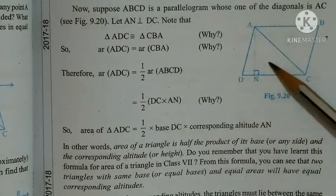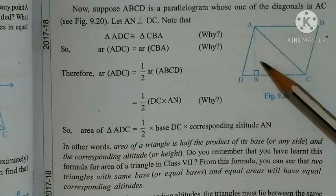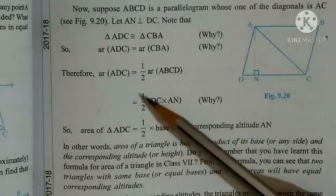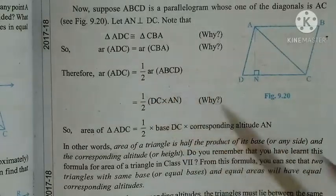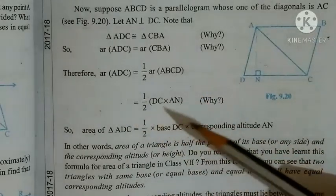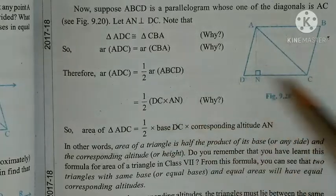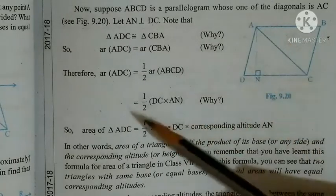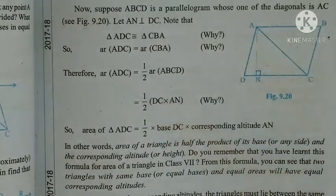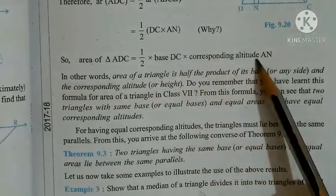Dhekhi, ek triangle hai, iska area is poore parallelogram ka half hooga. Yahaan, two triangles hai. Area of parallelogram kya hota hai, half into base into height. Base dhekha hai DC aur height kya hai, AN. Area ADC equal half DC into AN.